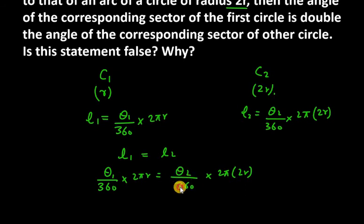Now we can see what is cut down here. 360 into 360 cancel, and 2π into 2π cancel. Now what is left? Theta 1 over r and theta 2 over 2r. R can also cancel.